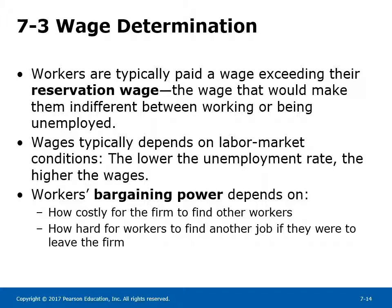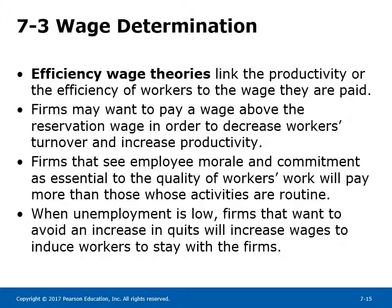Workers are typically paid a wage exceeding their reservation wage — the wage that would make them indifferent between working or being unemployed. Wages typically depend on labor market conditions; the lower the unemployment rate, the higher the wages. Workers' bargaining power depends on how costly it is for the firm to find other workers and how hard it is for workers to find another job if they were to leave the firm. Efficiency wage theories link the productivity or efficiency of workers to the wage they are paid. Firms may want to pay a wage above the reservation wage in order to decrease workers' turnover and increase productivity. Firms that see employee morale and commitment as essential to quality will pay more than those whose activities are routine.